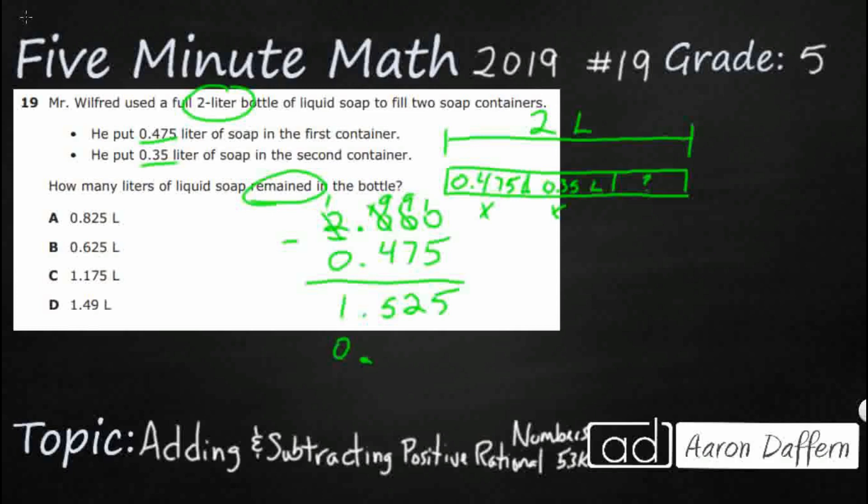So we're going to do 0.35, or 35 hundredths. Always put a zero there if we want to, just to kind of keep things going. Let's see what we have. That's 5, we need to borrow from this. That's 7, that's 1. So 1.175.